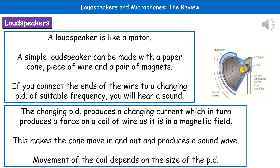The changing potential difference produces a changing current. Because that current is changing within a magnetic field, a force is produced on the coil of wire — just as we've seen with motors. As a result of that force, the coil moves and pushes on the diaphragm, so the diaphragm moves in and out, pushing on the particles in the air and causing compressions and rarefactions, which is our sound wave.